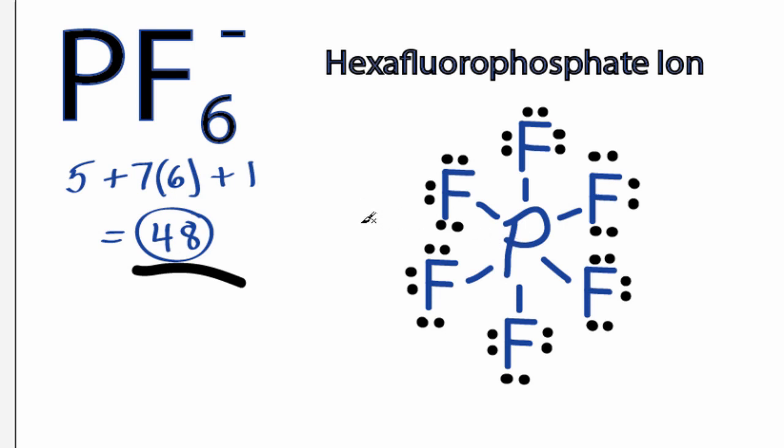The key here is that phosphorus is below period 2 in the periodic table. That means it can have an expanded octet, can hold more than 8 valence electrons. Here it's holding 2, 4, 6, 8, 10, 12. That's okay though, because of that expanded octet we can do that.